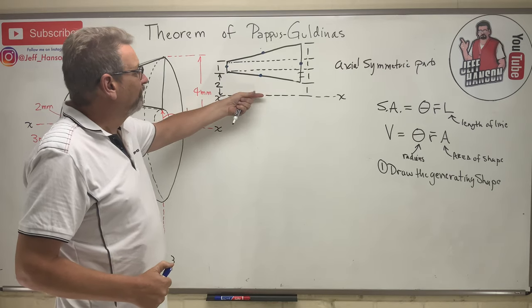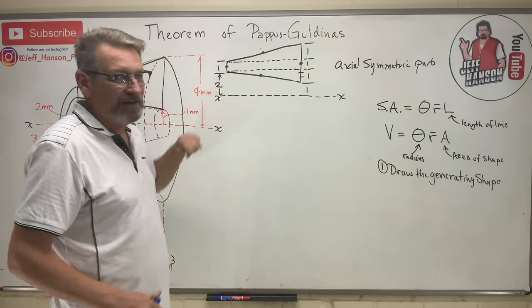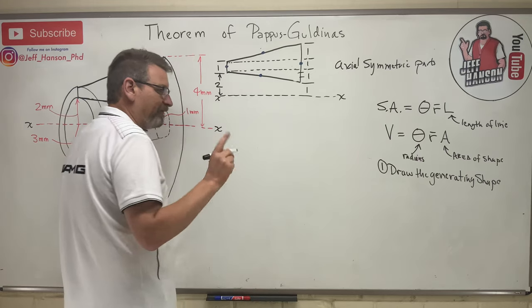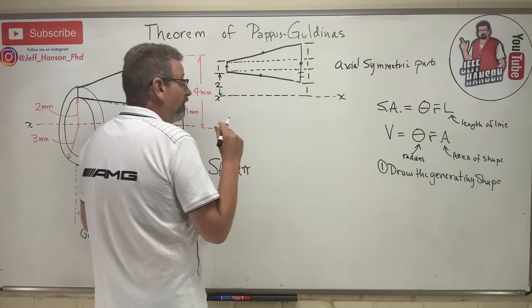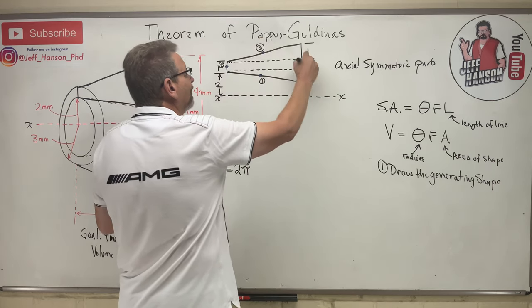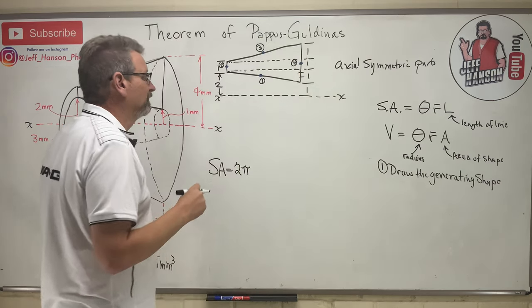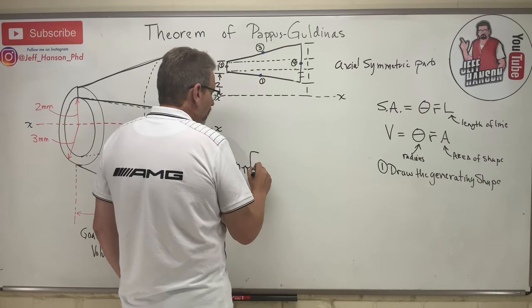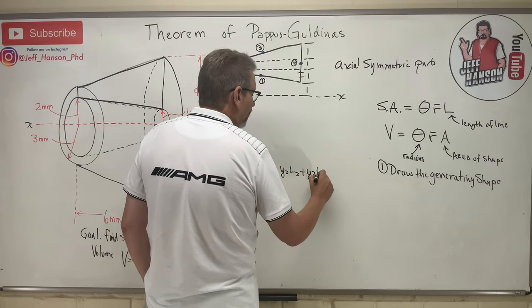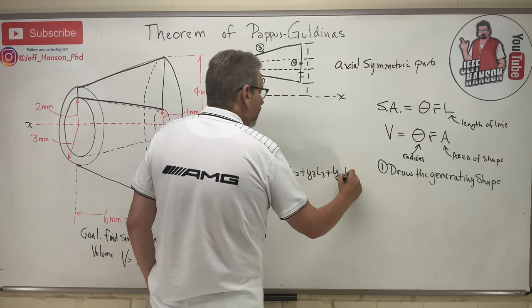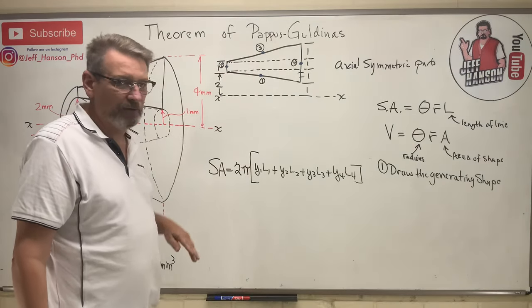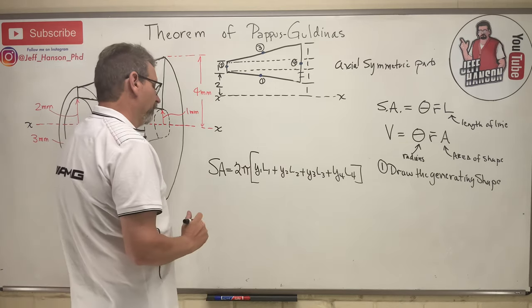I'll place a dot at the centroid of each perimeter line — one for each of the four lines. SA = 2π · (ȳ₁L₁ + ȳ₂L₂ + ȳ₃L₃ + ȳ₄L₄). ȳ here is just how far it is from the axis out to that centroid dot on each line. Let's fill this in.